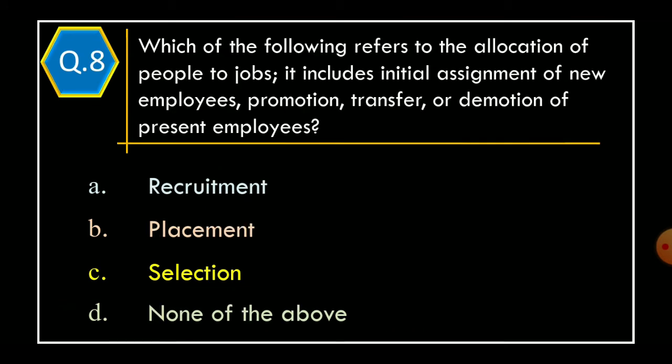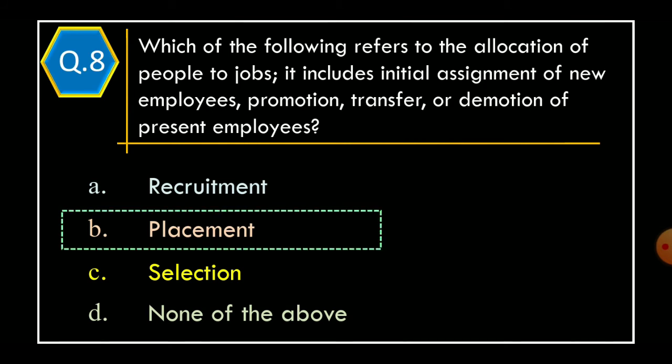Question 8. Which of the following refers to the allocation of people to jobs? It includes initial assignment of new employees, promotion, transfer, or demotion of present employees. Option A: Recruitment. Option B: Placement. Option C: Selection. Option D: None of the above. The correct option is Option B: Placement.